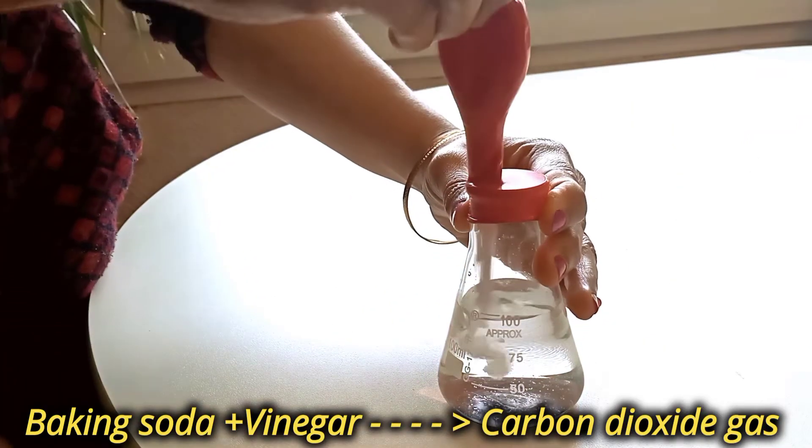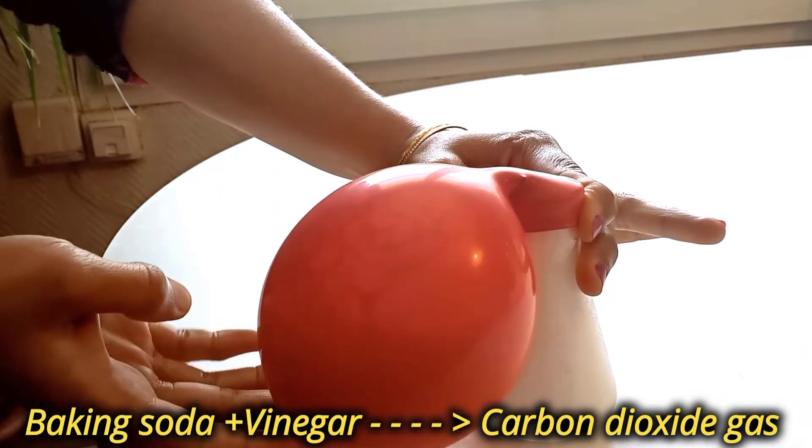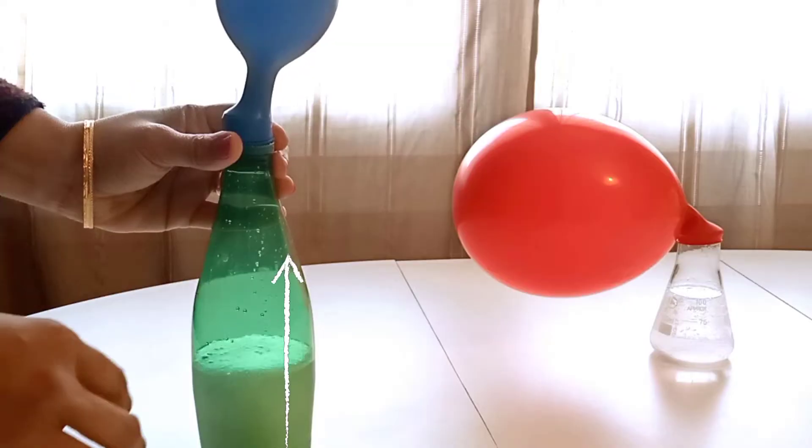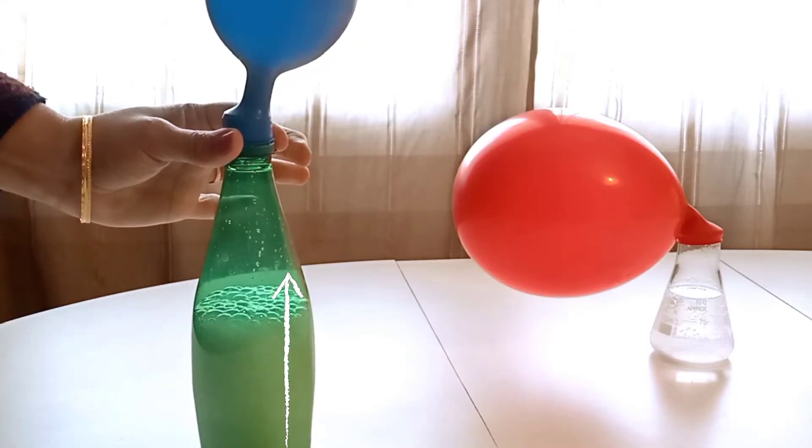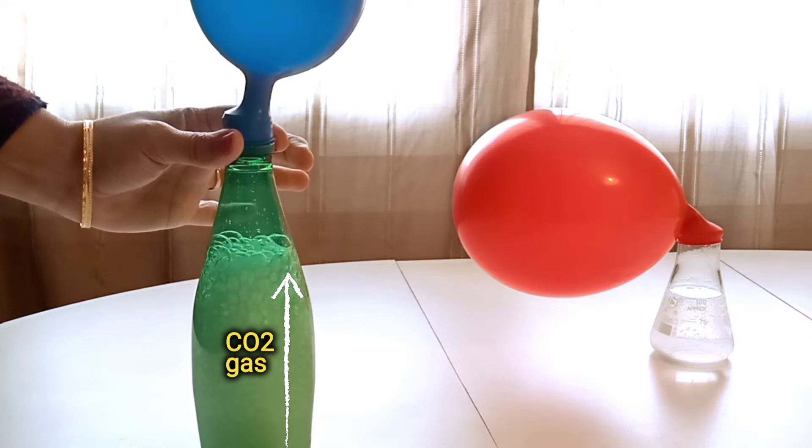When baking soda and vinegar are mixed together, the chemical reaction creates a gas called carbon dioxide. Inside the conical flask or bottle, you can see an eruption of the carbon dioxide gas in the form of bubbles.